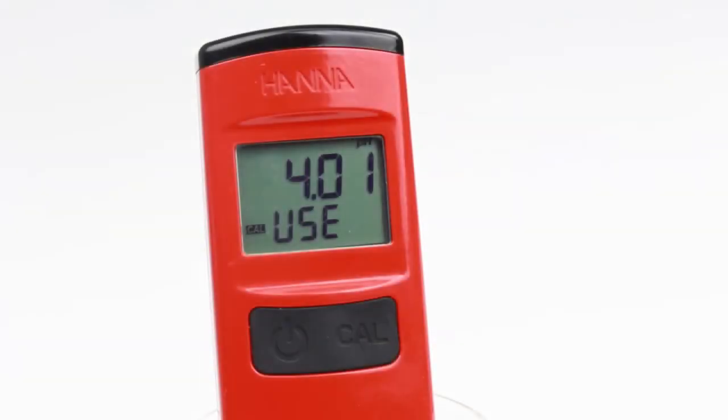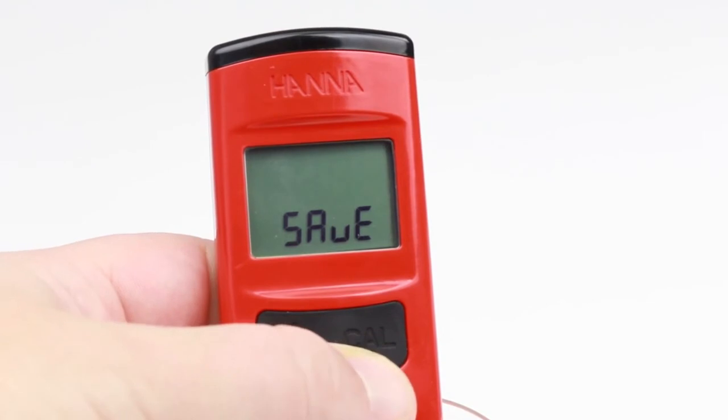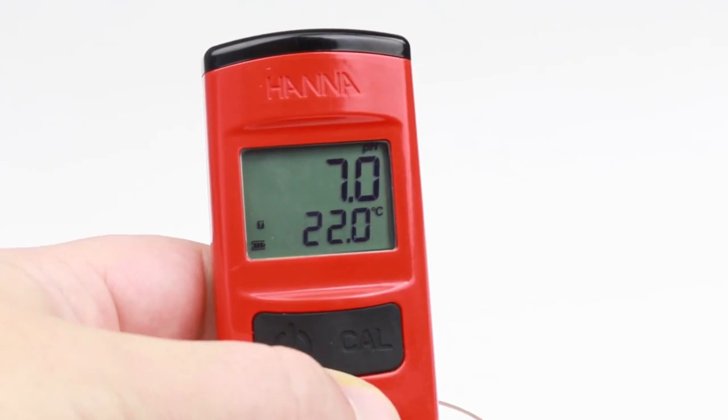For single-point calibration, press Cal key to exit. Save message is displayed and the meter returns to pH measurement mode.